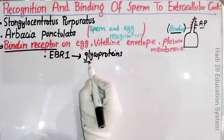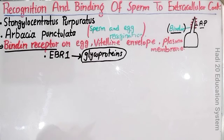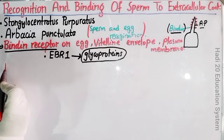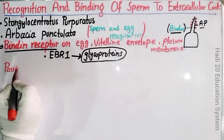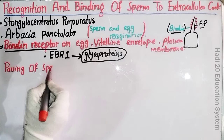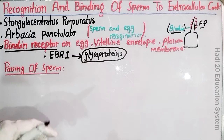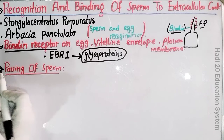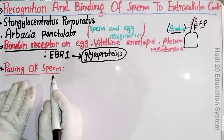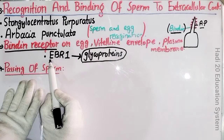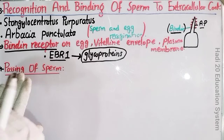تو یہ ہمارا step number three یہاں پہ complete ہو گیا۔ اب ہم step number four کی بات کرتے ہیں — step number 4 ہے: passing of sperm through the extracellular envelope۔ یعنی کہ ہم یہ دیکھیں گے کہ جو sperm ہے وہ کس طرح سے extracellular medium سے pass کرنے والا ہے۔ Dear friends، اگر ہم اس point کی بات کریں تو یہ بہت ہی minor سا چھوٹا سا point ہے۔ آپ کو یاد رکھنا ہے کہ جیسے ہی sperm نے egg کے ساتھ آ کے attach کیا اور binding protein نے receptor sites پر attach ہوئیں، اس mechanism کے complete ہوتے ہی کیا ہوگا؟